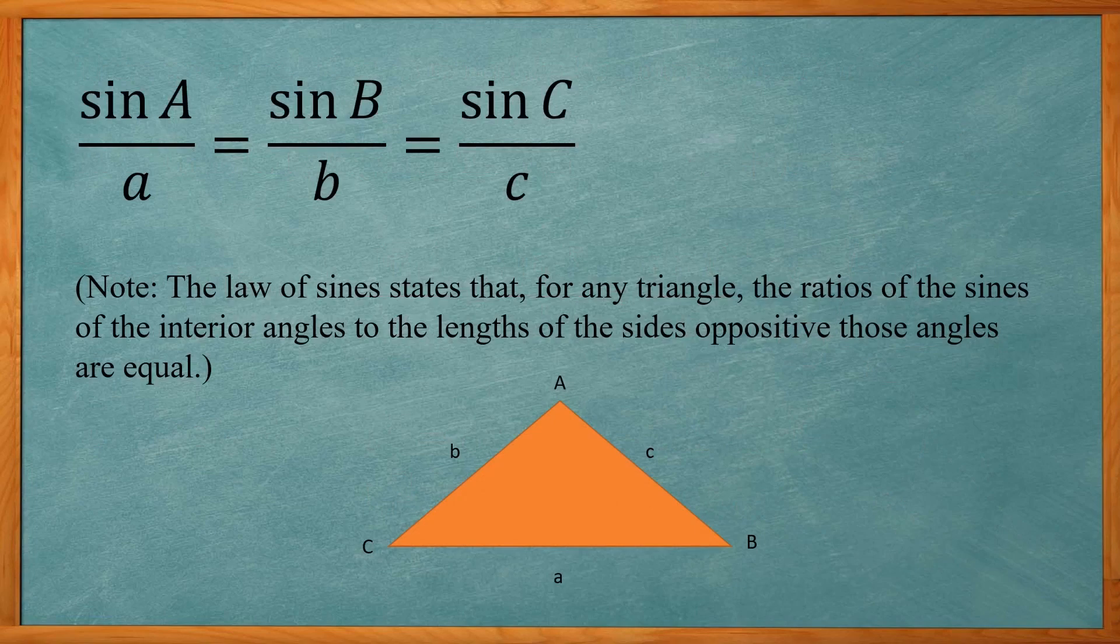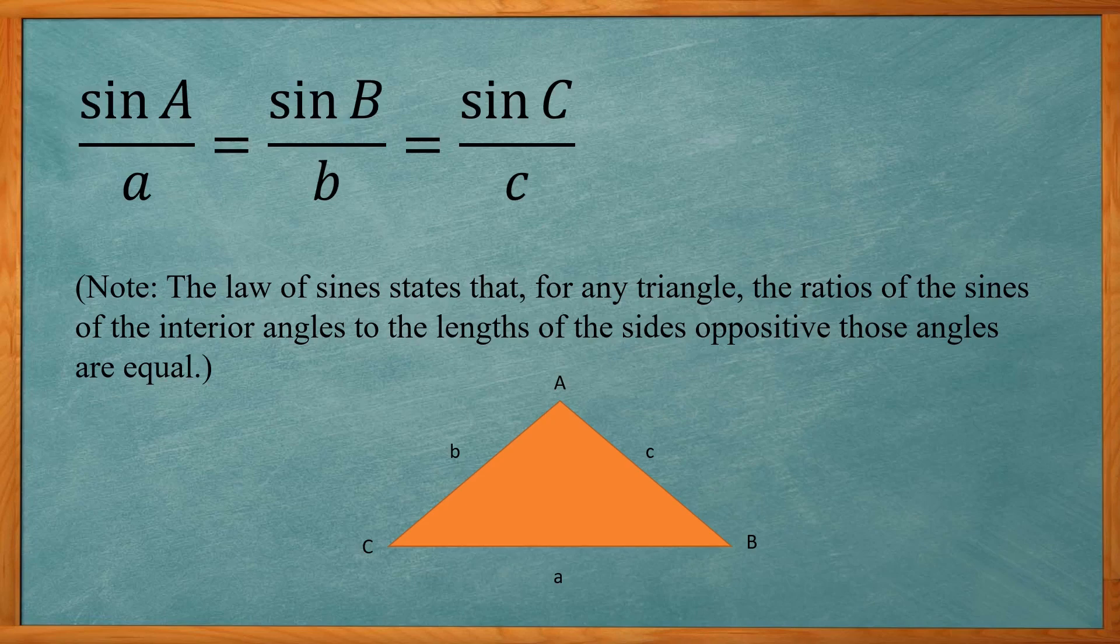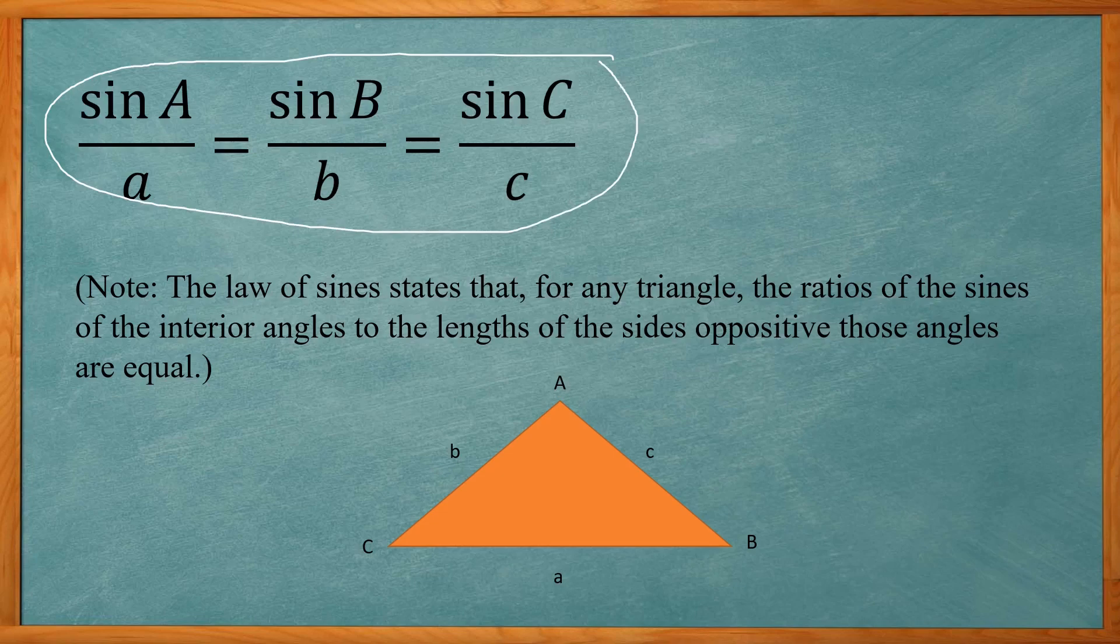In the actual ACT problem, they'll either give you the equation for the law of sines, or they give you this note saying that the law of sines states that for any triangle, the ratios of the sines of the interior angles to the lengths of the sides opposite those angles are equal. Anytime you see these words, you just have to remember what that actually means. The ratio of sines is the sine of the angle divided by the length of the opposite side.